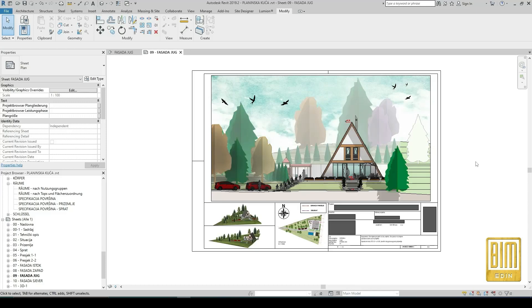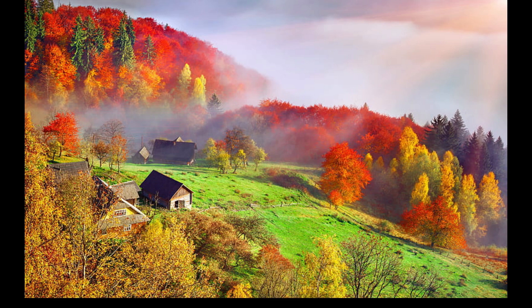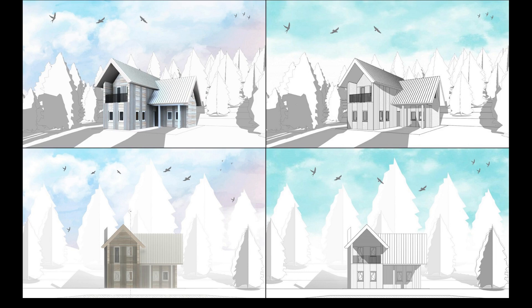That's it for this tutorial. This is one very simple way to create different types of presentations. Please don't forget to subscribe and share my tutorials. In the next tutorial I will show you how to use different visual styles like hidden lines, and also how to combine different visual styles — for example, hidden line visual style with realistic visual style. We can make topography and plants with sky in hidden line visual style, and the building can be in realistic visual style. I will show you that in the next tutorial.